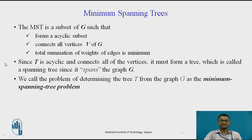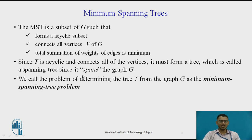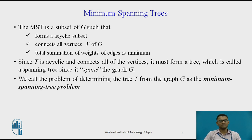Since T — that is, the tree — is acyclic and connects all the vertices, it must form a tree called a spanning tree, as it spans the graph G or covers all the nodes of the graph G. We call this problem the minimum spanning tree problem.